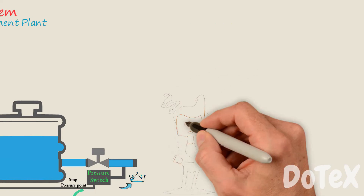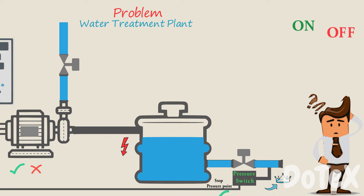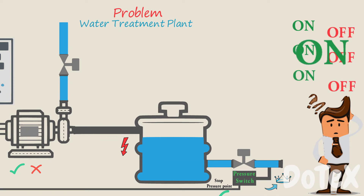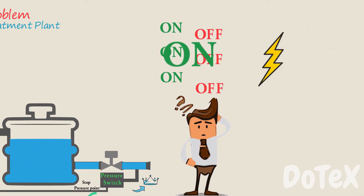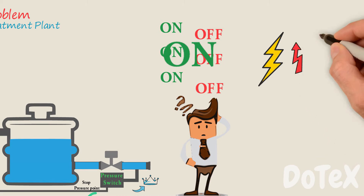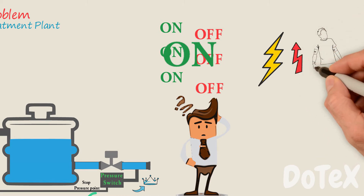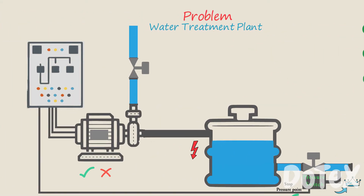So what is the problem? This traditional system will start and stop the pump a lot of times. Turning on and off uses a lot of energy, and this energy loss will cost us money. So how can we solve this problem?